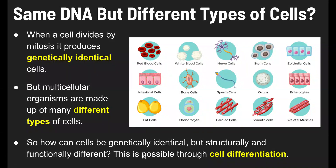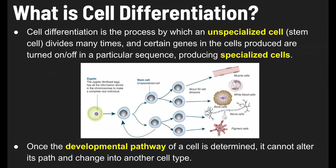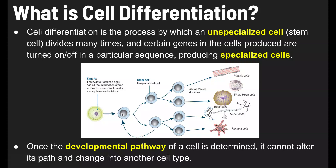Well, this is possible through cell differentiation. Cell differentiation is the process by which an unspecialized cell — a stem cell — divides many times, and certain genes in the cells produced are turned on or off in a particular sequence, producing specialized cells. Once the developmental pathway of a cell is determined, it can't alter its path and change into another cell type.